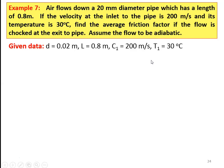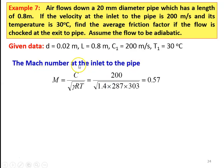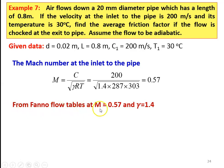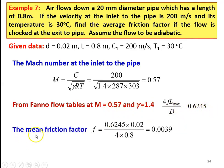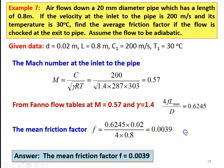C1 equal to 200 meters per second and T1 equal to 30 degree Celsius. We calculate the Mach number at inlet: M equal to C divided by square root of gamma R T, which is 200 divided by square root of 1.4 into 287 into 303, equal to 0.57. From the fanno flow table, table number 6.2, for M equal to 0.57 and gamma equal to 1.4, we take 4FL max by D equal to 0.6245. The mean friction factor F equal to 0.6245 into 0.02 divided by 4 into 0.8, equal to 0.0039.